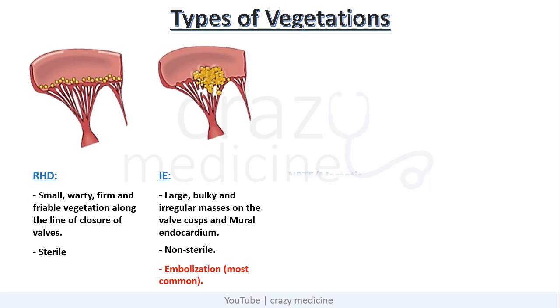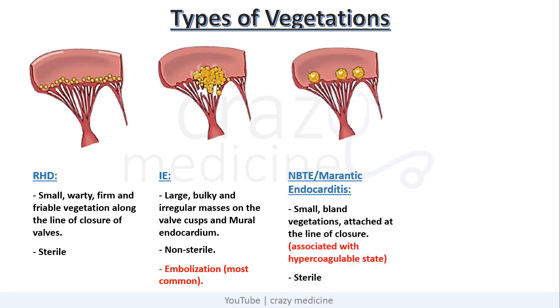Next is non-bacterial thrombotic endocarditis, also known as marantic endocarditis. Here vegetations are sterile and bland, along the line of closure. It is usually associated with a hypercoagulable state.